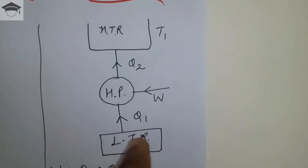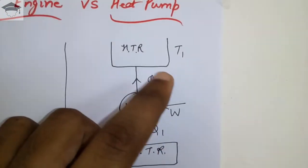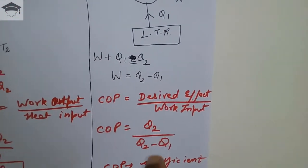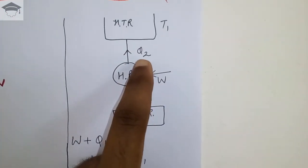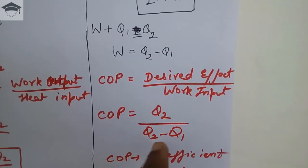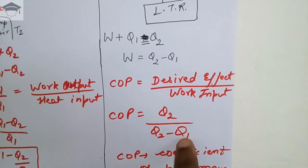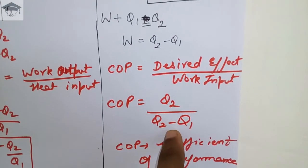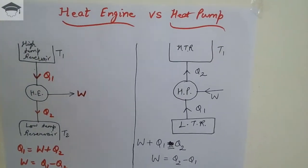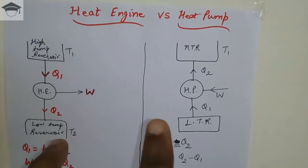The heater gives out heat Q2 as the desired effect. So the desired effect is Q2, and work input is Q2 minus Q1. Therefore, COP is equal to Q2 upon Q2 minus Q1. You can understand that heat engine and heat pump are opposite to each other.